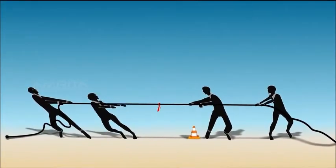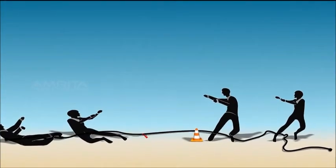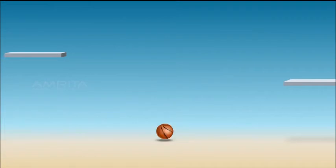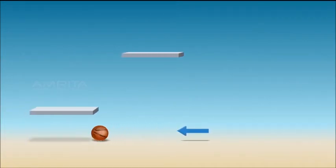If one of the teams lets go of the rope, the opposite team falls backwards. This tendency to fall backwards despite letting go of the rope is due to inertia. That is, if an object is at rest, it tends to remain at rest and if it is in motion, it tends to stay in motion. This property of an object is called its inertia.